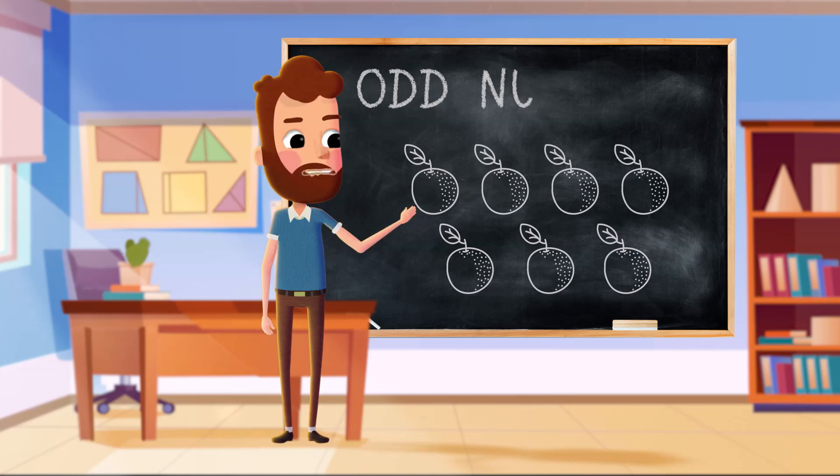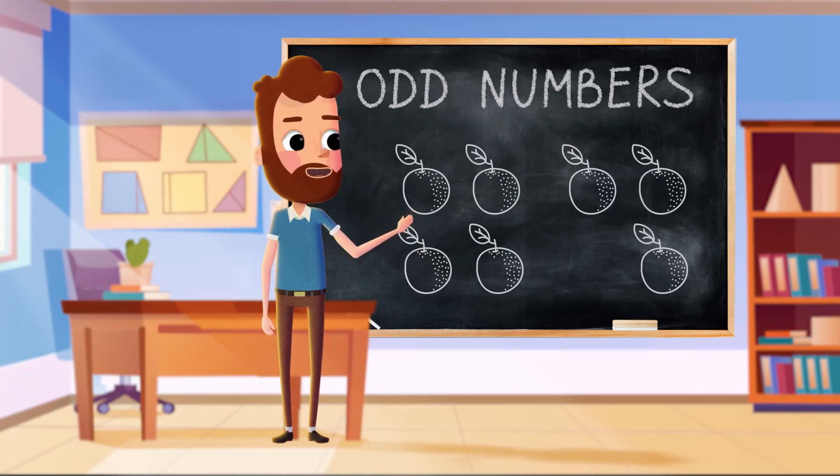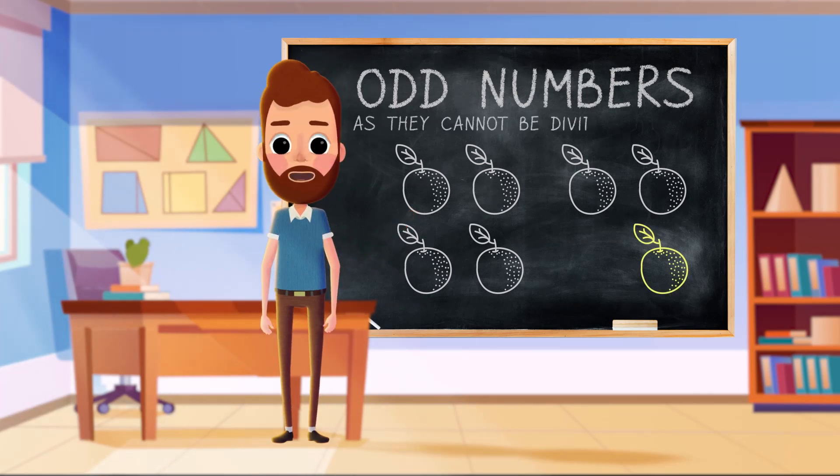For example, here are seven oranges. If we pair them into two, we have three pairs and one left over. This means that seven cannot be divided by two.